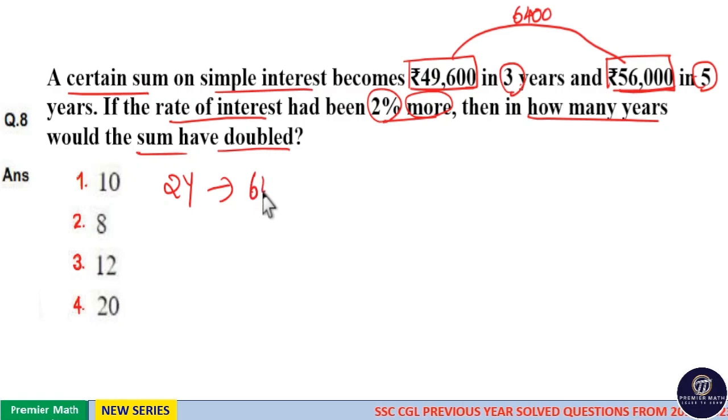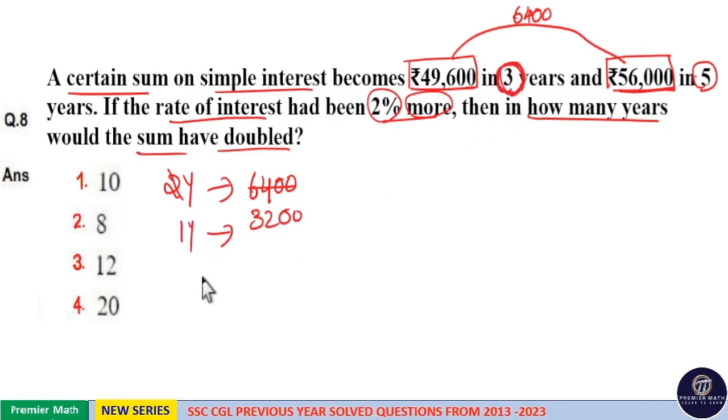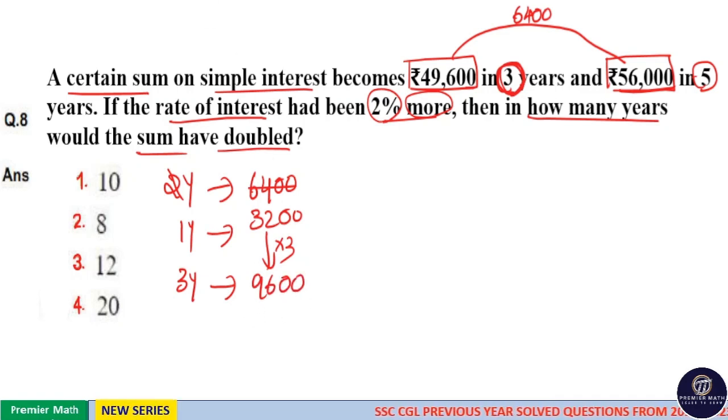In 2 years, the interest generated is ₹6,400. Therefore, in 1 year, the interest generated is ₹3,200. Now calculate the interest generated for 3 years. For 3 years, the interest is ₹3,200 × 3, which equals ₹9,600.